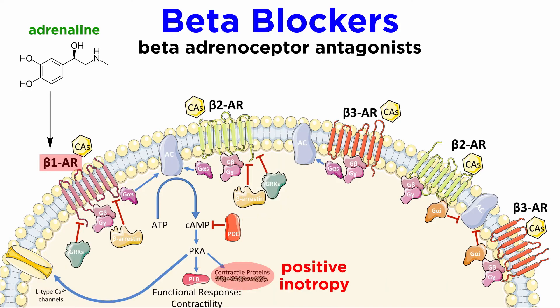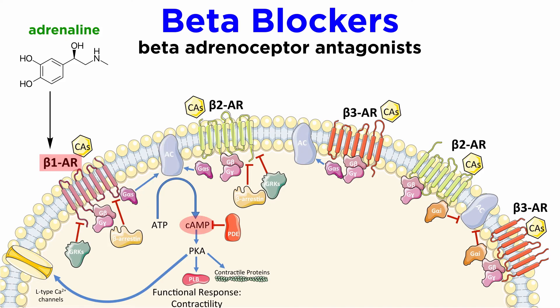Contractility of the myocytes is also increased, which is called positive inotropy, through its action as a G-alpha-S coupled GPCR, activating adenylate cyclase and increasing intracellular cAMP concentrations, which leads to increasing the activity of protein kinase A and phosphorylation of many proteins involved in cardiac muscle contraction.